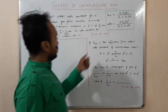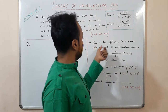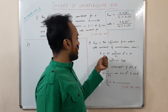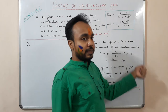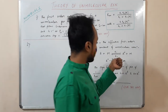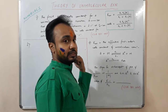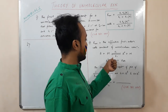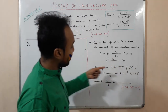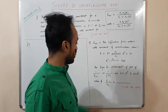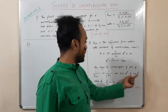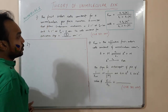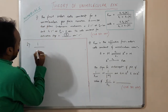In question number two, K_unimolecular is the effective first order rate constant for a unimolecular reaction. The reaction given is: A + M → A* + M → products + M. We are given the slope and the intercept for the plot of 1/K_uni versus 1/[M]. We are asked to find the value of K₋₁/K₂.